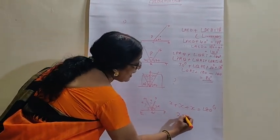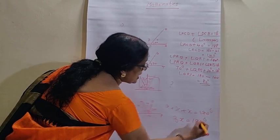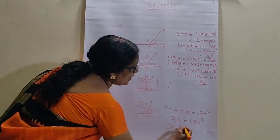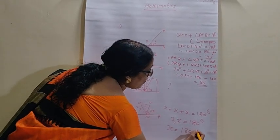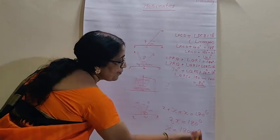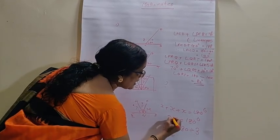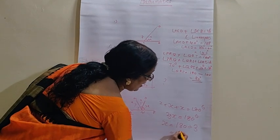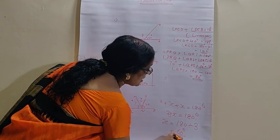So, x equals 180 divided by 3. That is 3x, 3x means 3 into x. Okay, children? So, 180 divided by 3, 60 degrees.